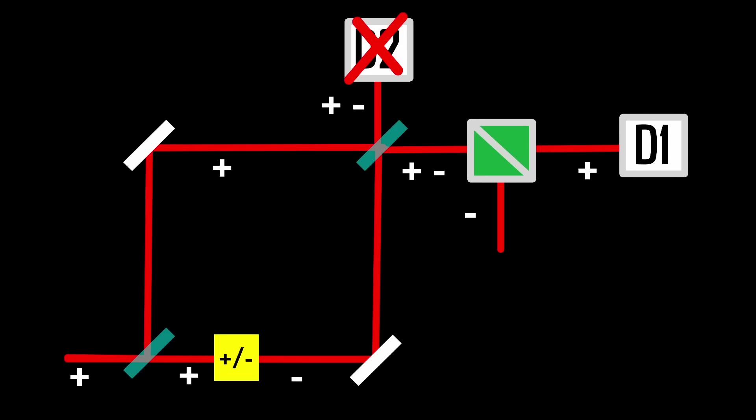What you have left then at detector one has the same properties as the original photon, goes into the same direction, has the same polarization. Now the question is, if a photon arrives at detector one, which path did it go?